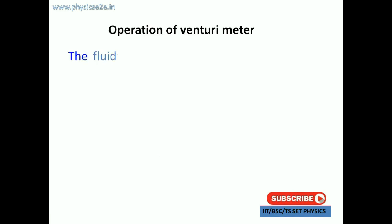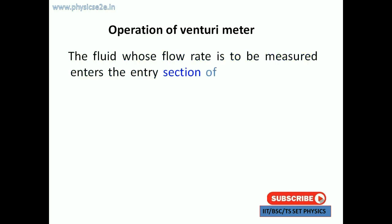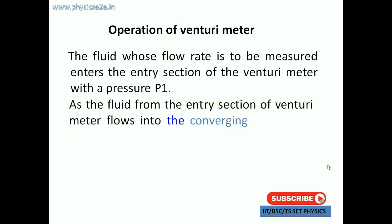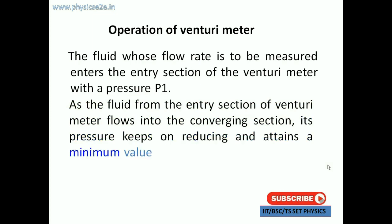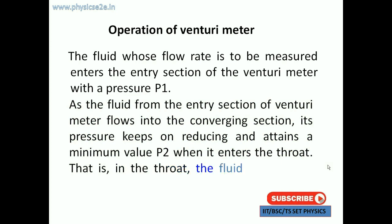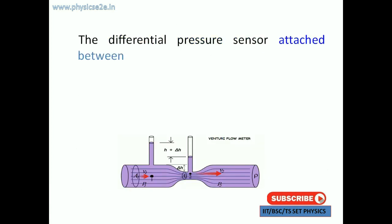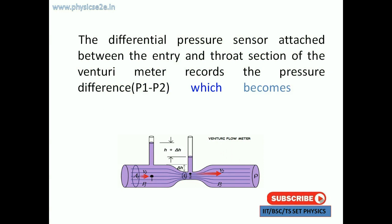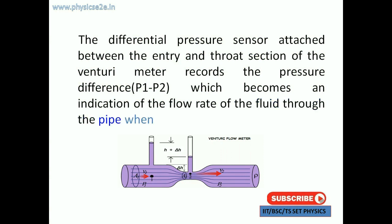Operations of the Venturi meter: the fluid whose flow is to be measured enters the inlet section of the Venturi meter with pressure p1. As the fluid flows into the converging section, the pressure keeps on reducing and attains a minimum value p2 when it enters the throat. The differential pressure sensor attached between the entry and throat section records the pressure difference p1 minus p2, which becomes an indicator of the flow rate of fluid through the pipe when calibrated.